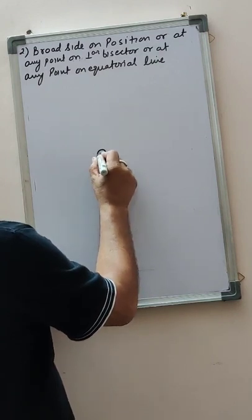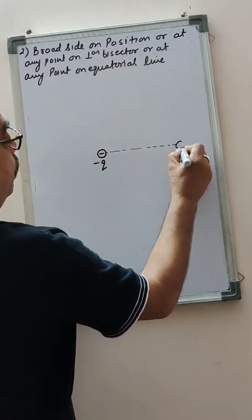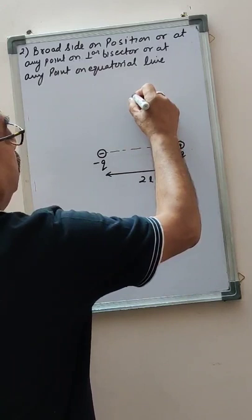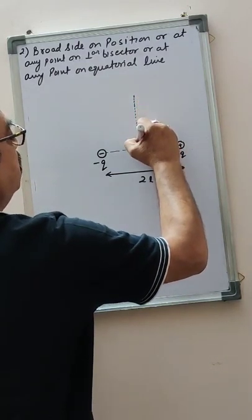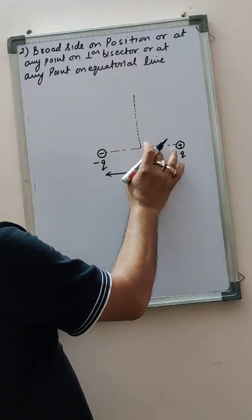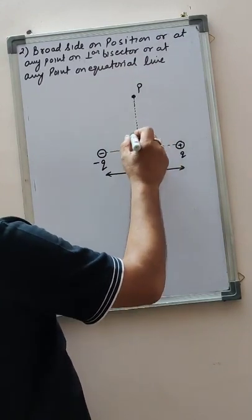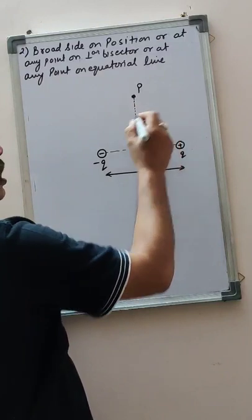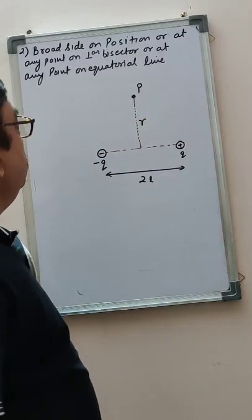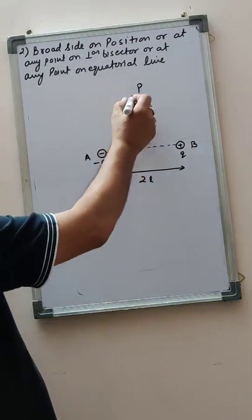This is the dipole: minus q and plus q, with the distance from minus q to plus q being l to l. This is the perpendicular bisector — the line which is perpendicular to the axis and bisects the axis into two equal parts. You have to find the electric field at a point here, and the distance of that point from the center is r. This point is A and this point is B.